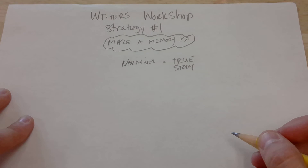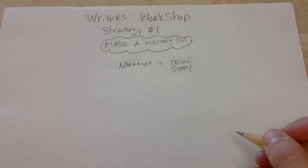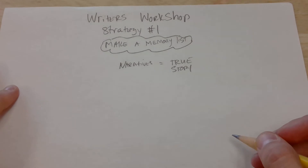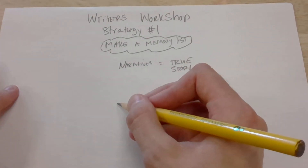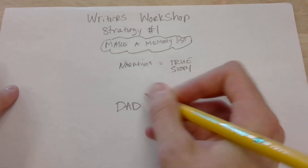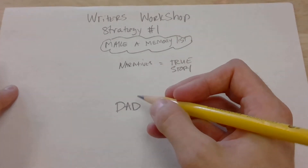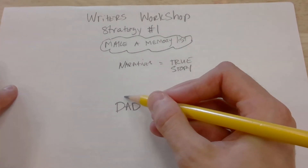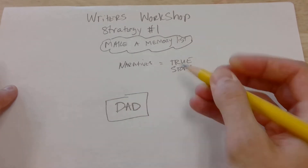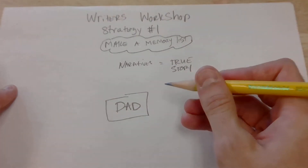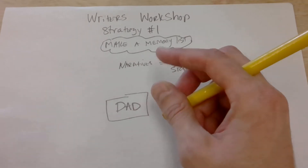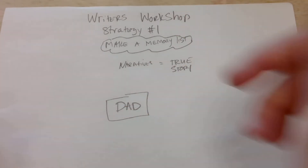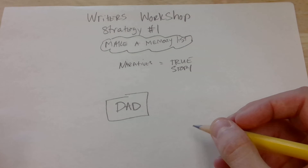The first thing I need you to do is come up with a topic — something to write about. What I'm going to do is find somebody to write about, and I'm going to choose my dad. You can choose your mom or anybody you want, even your dog. What I like to do is make a list of happy memories that I have with my dad.